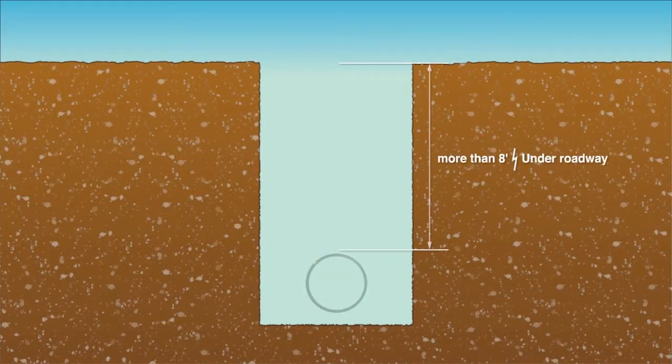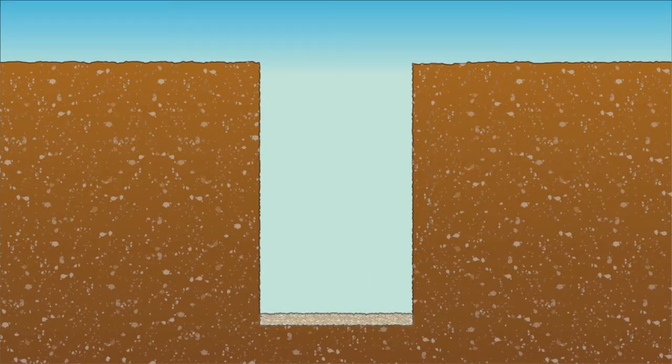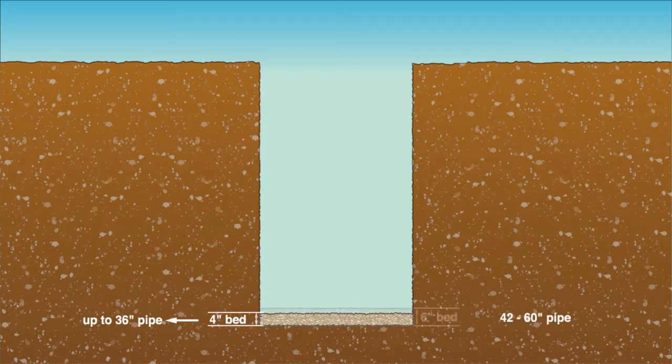For pipe buried 8 feet or more or under a roadway, a flat bottom trench with imported fill is recommended. Prinsco recommends 4 inches of 1.5 inch minus crushed rock or gravel as bedding for pipe diameter up to 36 inches. 42 inch and larger pipe should have 6 inches of 1.5 inch minus crushed rock or gravel for bedding.